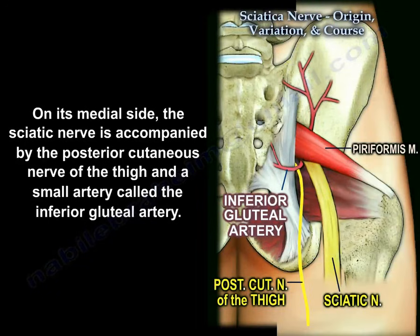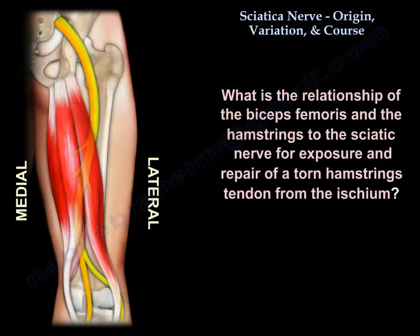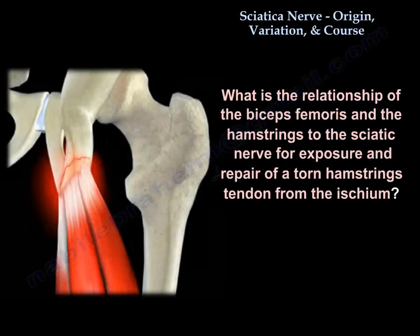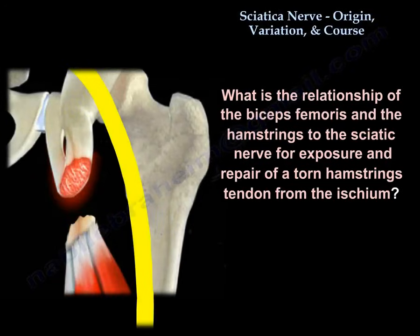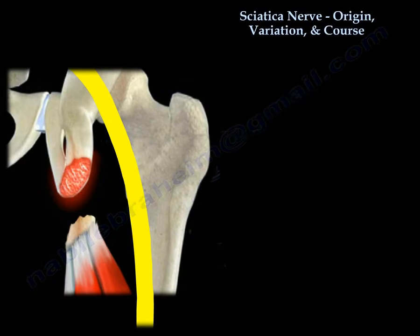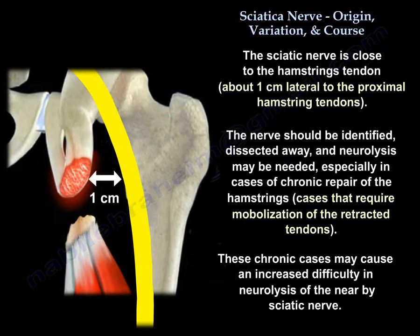On its medial side, the sciatic nerve is accompanied by the posterior cutaneous nerve of the thigh and a small artery called the inferior gluteal artery. Regarding the relationship of the biceps femoris and hamstrings to the sciatic nerve for exposure and repair of a torn hamstring tendon from the ischium: the sciatic nerve is about one centimeter lateral to the proximal hamstring tendons. The nerve should be identified, dissected away, and neurolysis may be needed — especially in cases of chronic hamstring repair requiring mobilization of retracted tendons, which can increase difficulty in neurolysis of the nearby sciatic nerve.